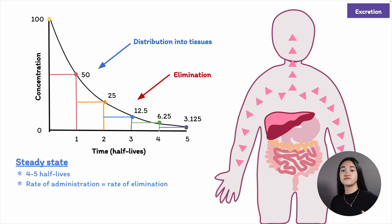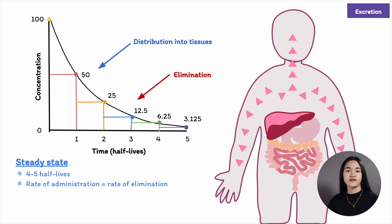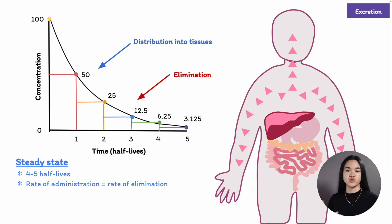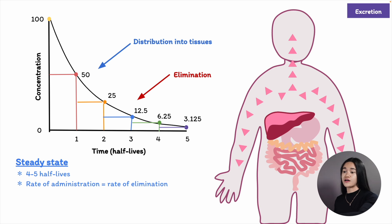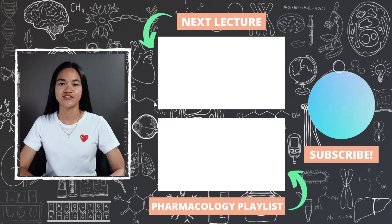Reaching steady state is important because we want a drug concentration that is high enough to be effective but not harmful. A drug with a short half-life reaches steady state more rapidly. If a drug has a long half-life and a patient needs therapeutic effect quickly, a loading dose is used — a higher amount of medication administered at treatment initiation to reach the desired concentration more quickly. It still takes four to five half-lives to reach steady state, but the initial concentration will be closer to the eventual steady-state concentration.